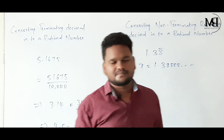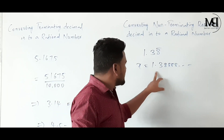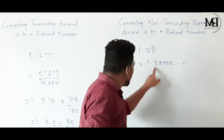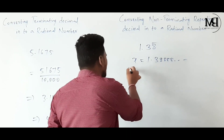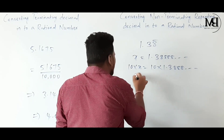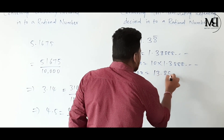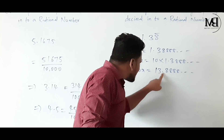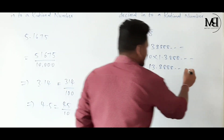Point number 1: we must keep the decimal point before the digit which is repeated. Observing the equation, the decimal point is not before the repeated digit 8 — so we must move it one step to the right by multiplying by 10. 10X = 10 × 1.388... = 13.888... Now the decimal point is before the repeated digit, so we consider 10X = 13.888... as equation 1.